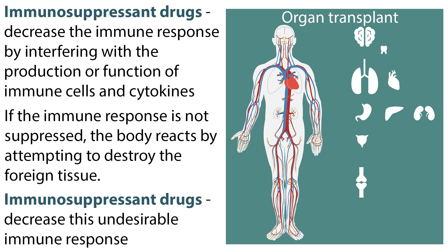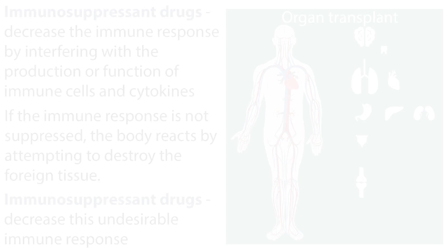Immunosuppressant drugs are used to decrease the immune response by interfering with the production or function of immune cells and cytokines. When foreign tissue or an organ is transplanted into the body, the body has an appropriate but undesirable immune response. If the immune response is not suppressed, the body reacts by attempting to destroy the foreign tissue. There is a fine balance to adequate immunosuppression for the body to accept the transplant without suppressing the immune system too much, where the patient develops serious infections and other adverse effects.